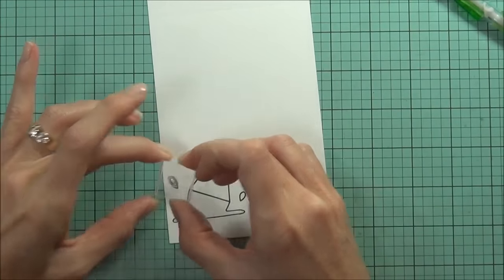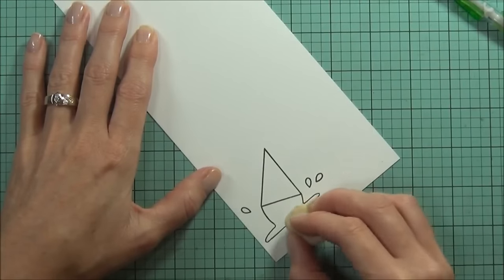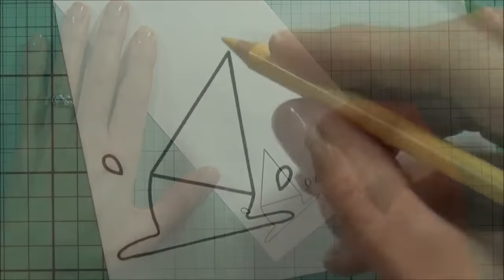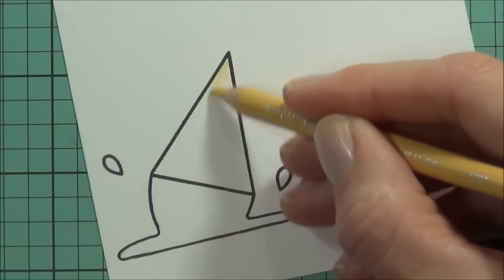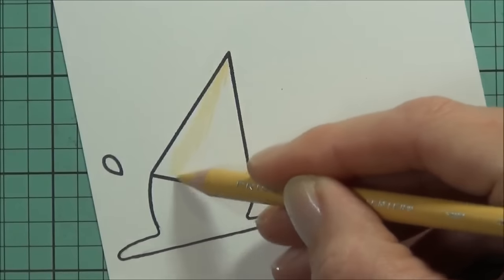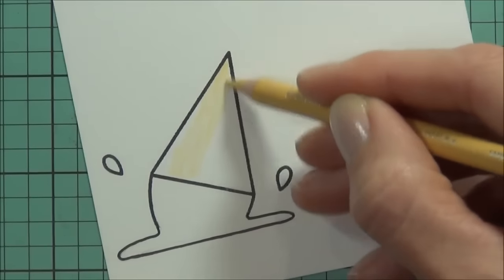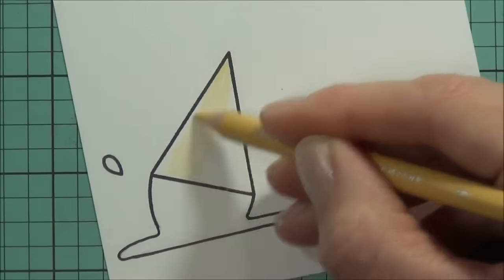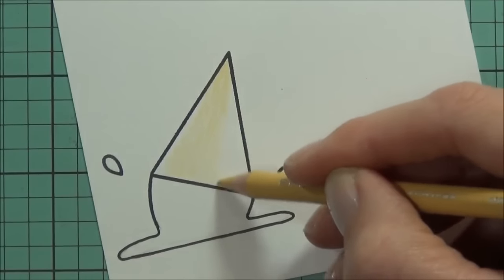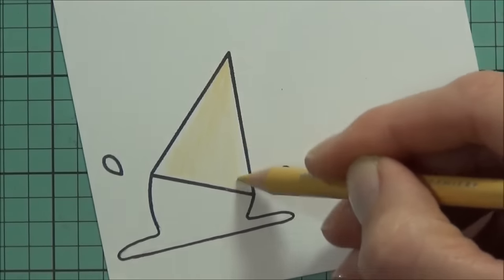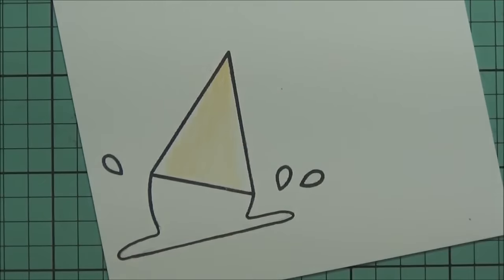Before I start coloring, I'll just make sure that I remove any of the pencil marks with an eraser. Today I'm going to be coloring with my Prismacolor pencils and I'm going to do some really simple coloring and blending with my Gamsol. If you want to know what colors I've used, they'll be listed over at my blog and the link will be in the YouTube description below.